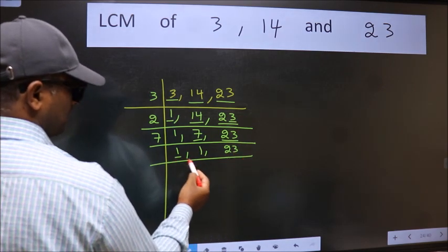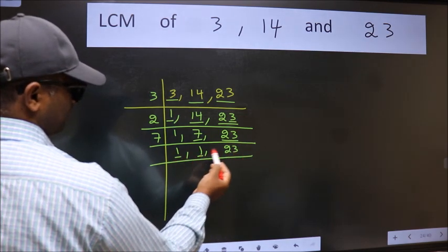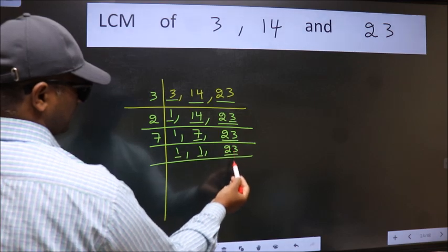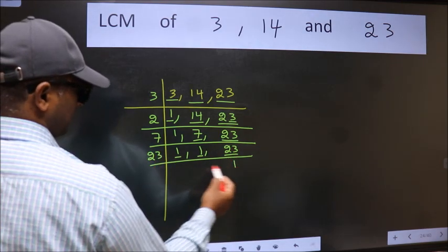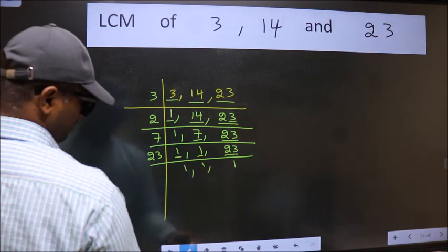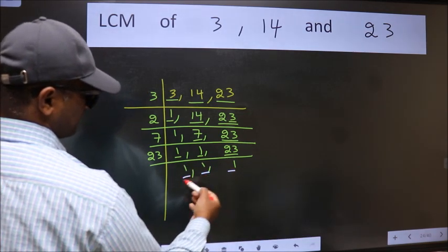Now we got 1 here and here so focus on the next number 23. 23 is a prime number so 23 goes into 23 once. So we got 1 in all the 3 places.